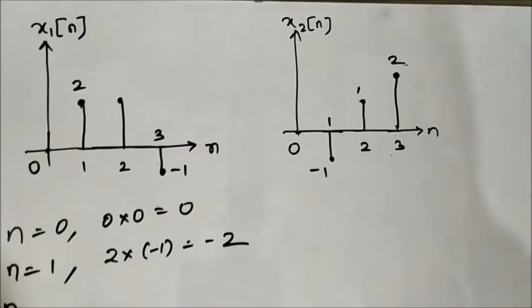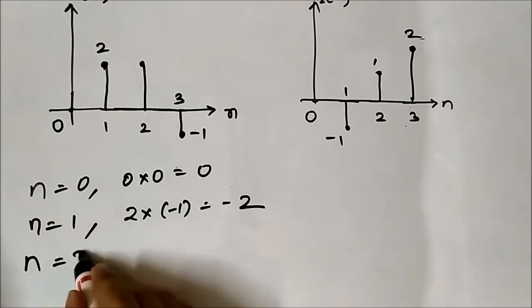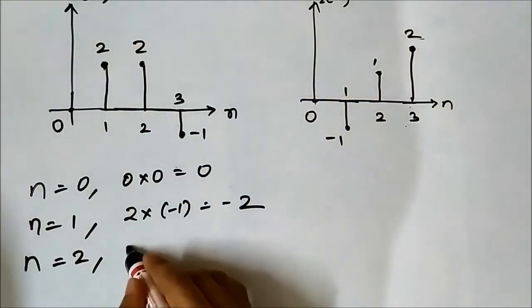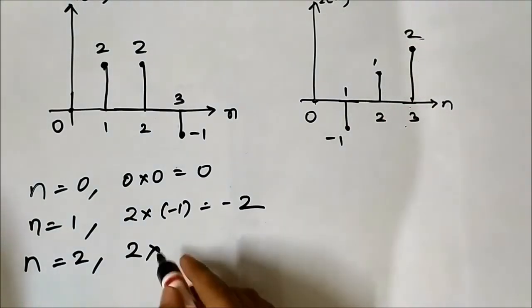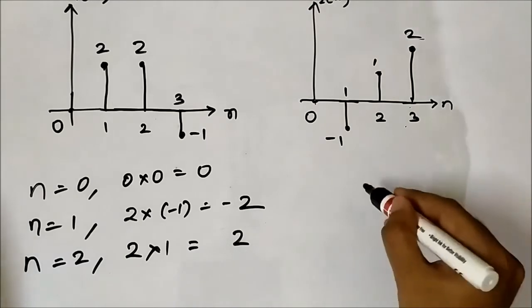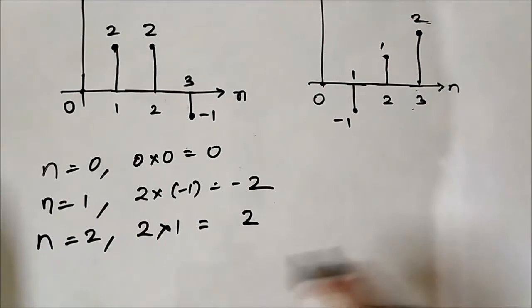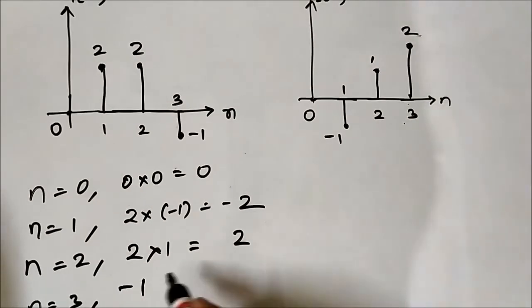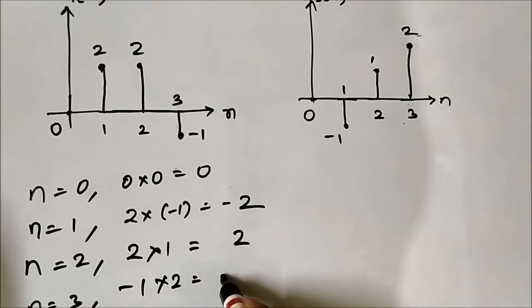At n equals 2, here it is 2, 2 into 1 which equals 2. At n equals 3, here it is -1 into 2, which equals -2.